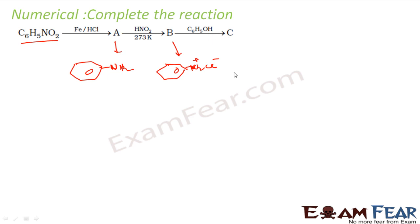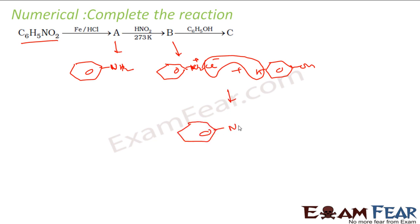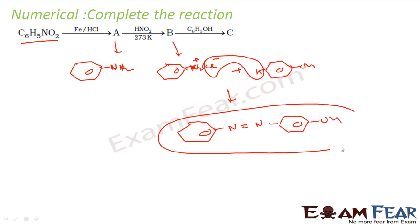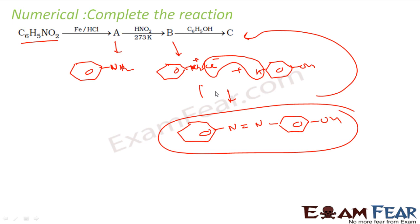In the coupling reaction, when the diazonium salt reacts with phenol (OH), the H and Cl come out and form a larger compound. The product C is para-hydroxyazobenzene. As I mentioned, if a diazonium salt reacts with an electron-rich aromatic compound, it forms a larger azo compound. This is used as a dye — it is a colored compound.